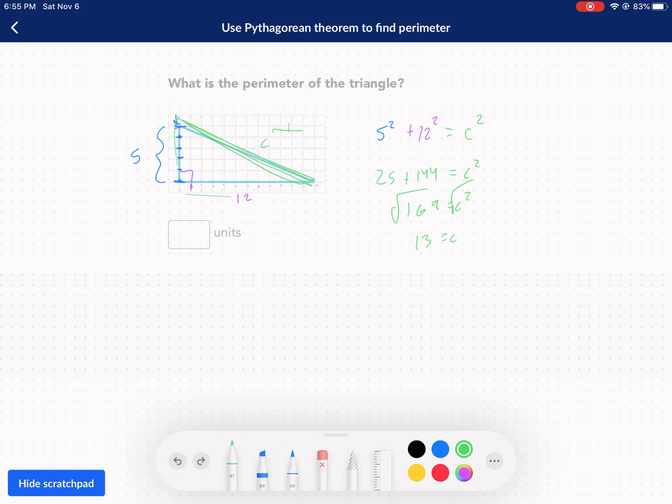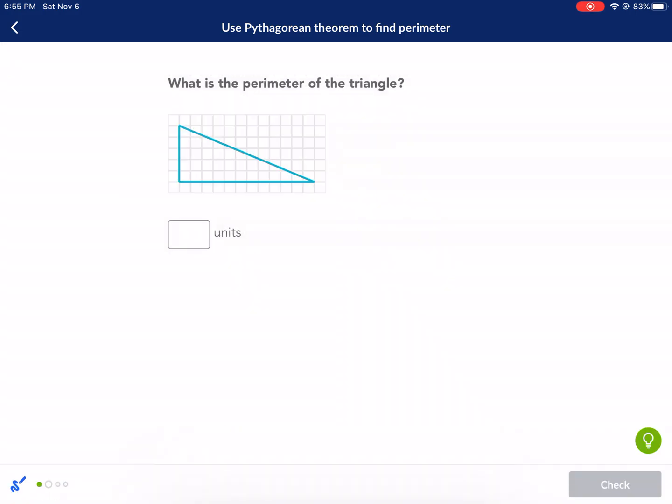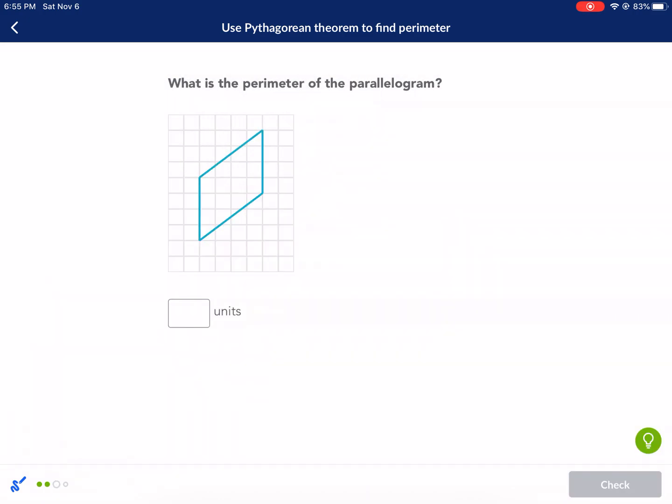So 13 plus five plus 12. Add those all up together. That's the final step. So that's 17 plus three, 20, 30. So that should be 30.